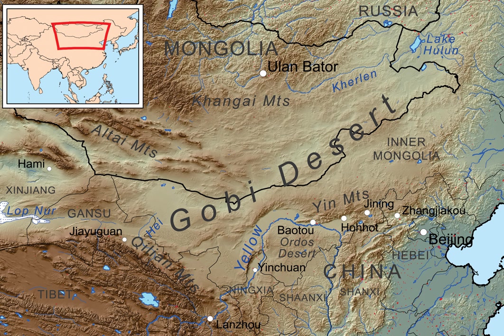They are occasionally visited by snow leopards, brown bears, and wolves. Lizards are especially well adapted to the climate of the Gobi Desert, with approximately 30 species distributed across its southern Mongolian border.